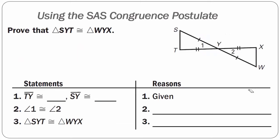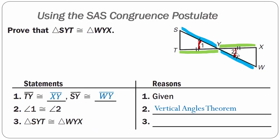Example 2, using the side-angle-side congruence postulate: prove that triangle SYT is congruent to triangle WYX. From the image, line segment TY is congruent to line segment XY — both have two tick marks. Line segment SY is congruent to line segment WY — one tick mark each. That's our given. Since we have two intersecting lines, angle 1 is congruent to angle 2 by the vertical angles theorem. We have two sides congruent to two sides and the included angle congruent to the included angle, so triangle SYT is congruent to triangle WYX by the side-angle-side congruence postulate.